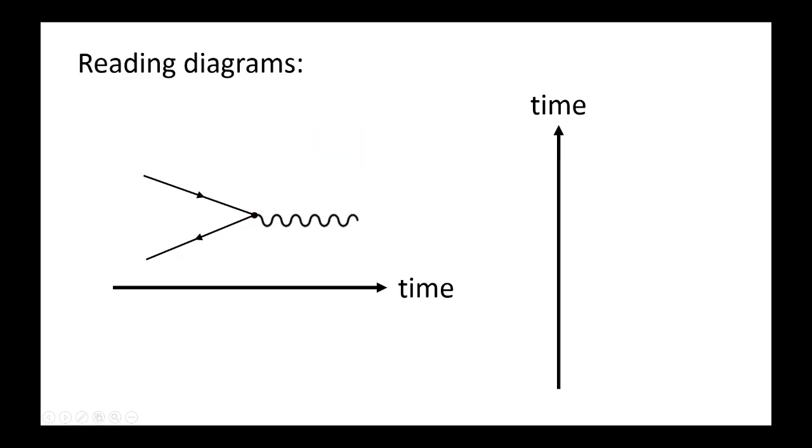So let's try to read this diagram. You have two particles. This is a matter particle, and this one is an antimatter particle, because it's pointing opposite the time axis. They collide, and what do they produce? An electromagnetic gamma photon.